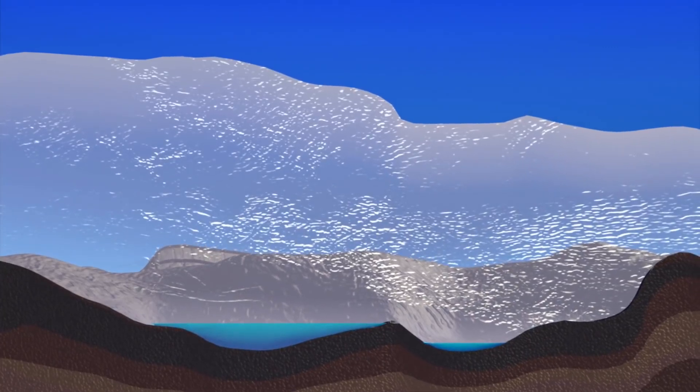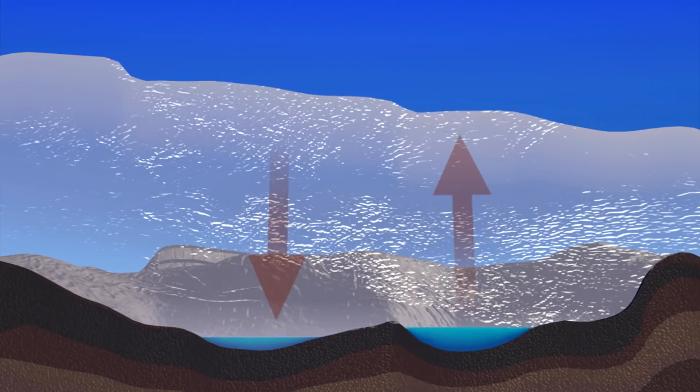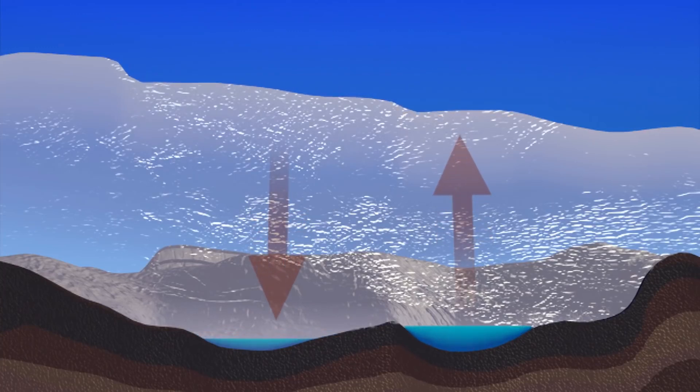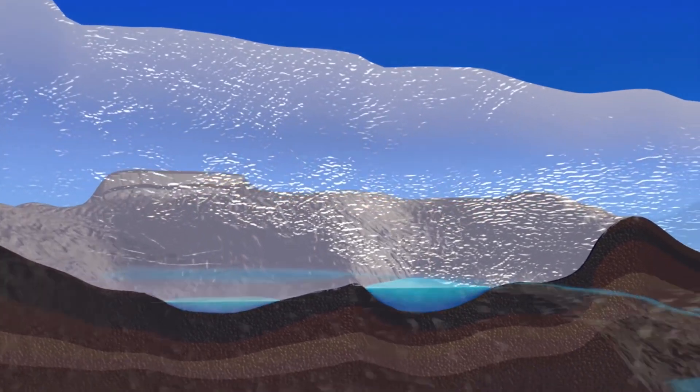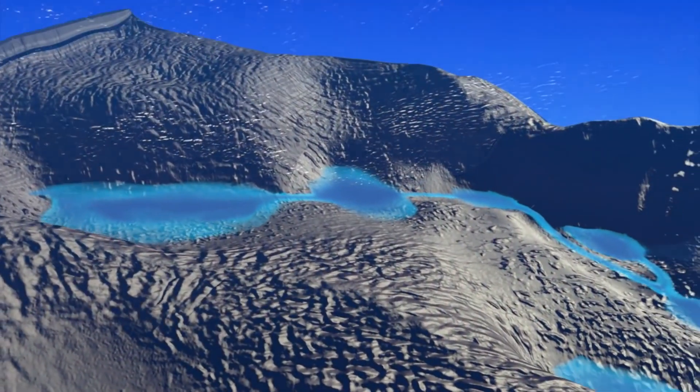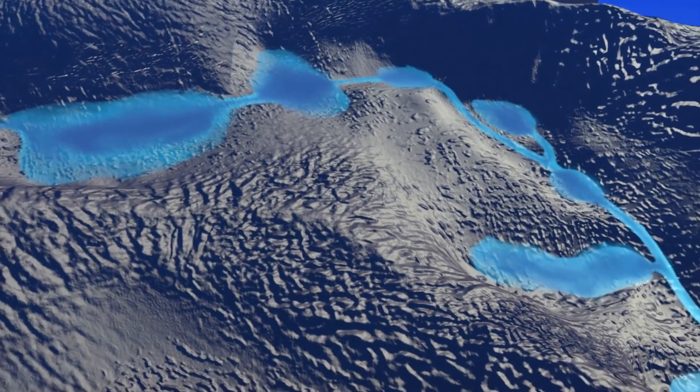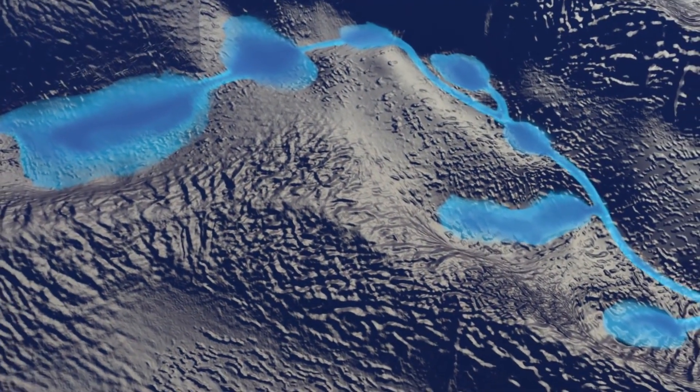By watching local areas of the surface of the massive ice sheet rise and fall due to fluctuations in the lake water levels below, we learned that vast hydrologic systems like rivers connect many of these lakes and that some actively fill and drain all the time.